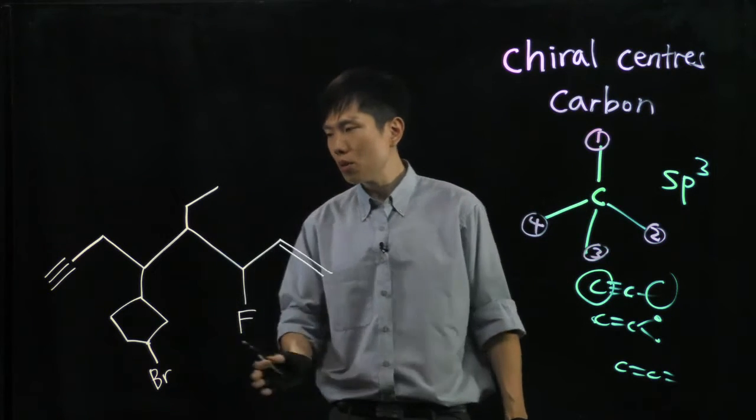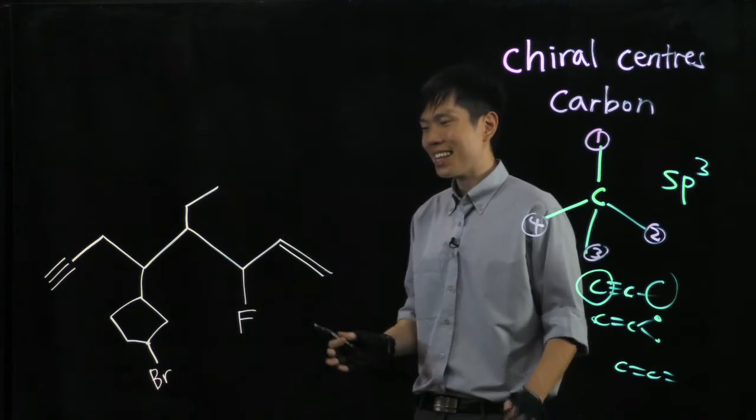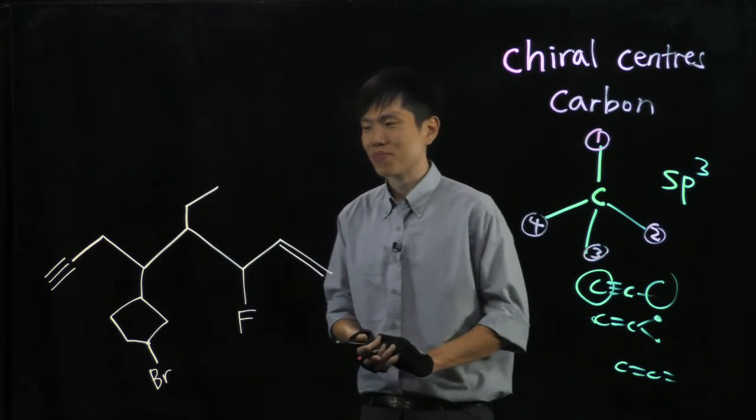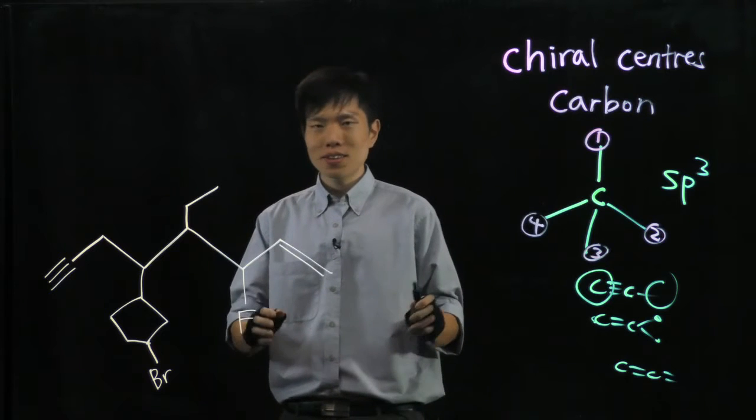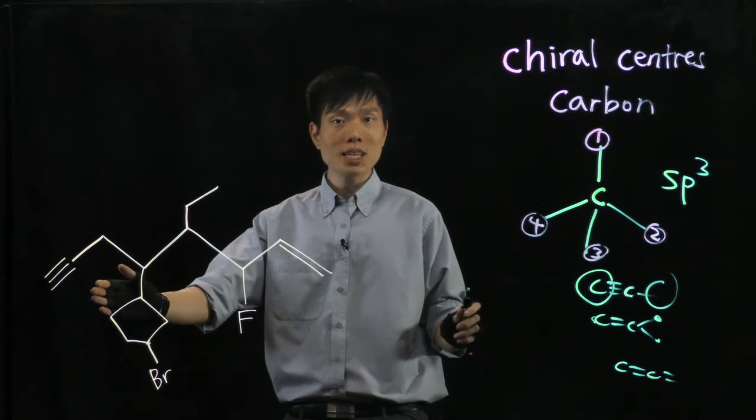So here you have an example of a diagram that I've drawn. And let's analyze where are the chiral centers. First look, we will see how many carbon atoms are present here.